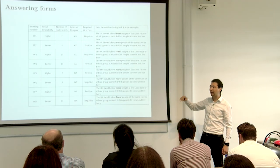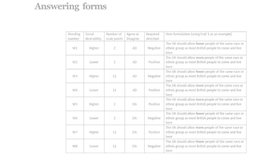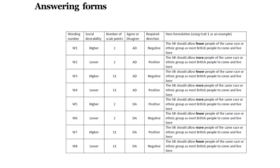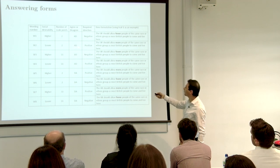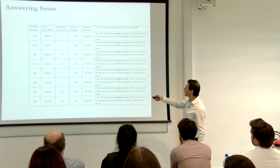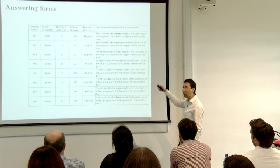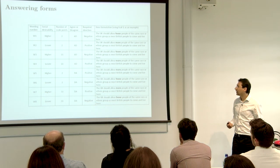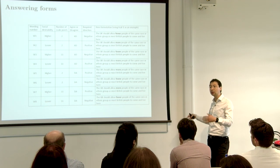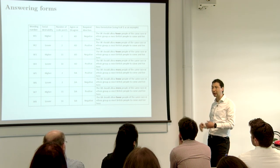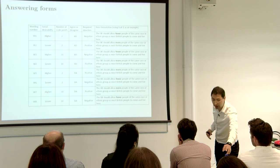Combining these manipulations, we get eight ways to ask the same question. For the first question, wording one has higher social desirability, a two-point response scale, agree-disagree order, and is negatively worded ('fewer'). Wording two is two-point agree-disagree but positively worded ('more'). Wording three is 11-point agree-disagree and negative, and so on through all eight variants. People received one wording at the beginning and one at the end, randomized. Combining all possible combinations gives us 56 experimental groups.